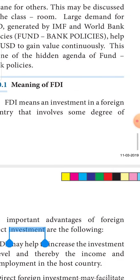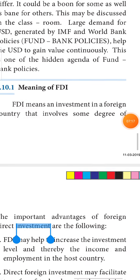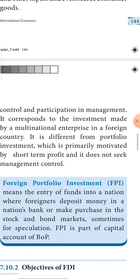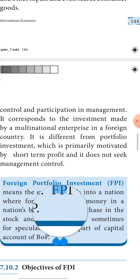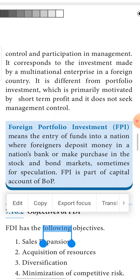The meaning of FDI: FDI means investment in a foreign country that involves some degree of control and participation in management. Investment is being made in a foreign country, and the investor takes control and management over that investment. It corresponds to investment made in a multinational enterprise in a foreign country.